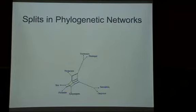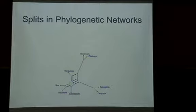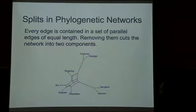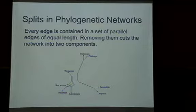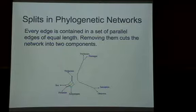As I said for the tree, the main information we have is the bipartitions induced by the edges. For a network, it works in a very similar way: every edge is contained in a set of parallel edges such that when we remove them, we get a disconnected network with two components. Taking those red edges all the way gives us our bipartition, and the length of each edge corresponds to the weight of that bipartition. This is how you get splits and weights from a given network.